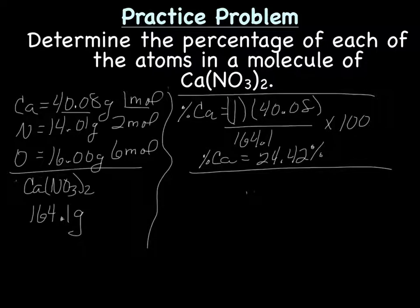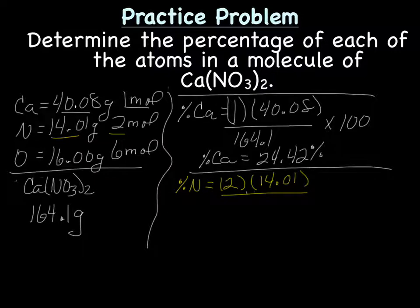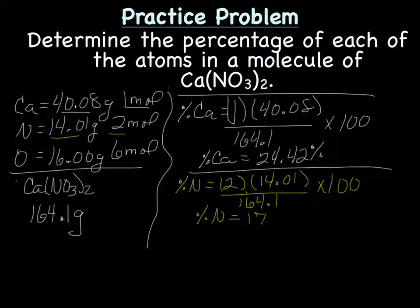And next, we'll do percent by mass of nitrogen. So, once again, we start with the moles, we have two moles of nitrogen times its molar mass, which is 14.01, divided by the molar mass of Ca(NO3)2, which is 164.1 grams. Multiply that whole thing by 100, and that comes up to be, I got, with four sig figs, 17.07 percent.